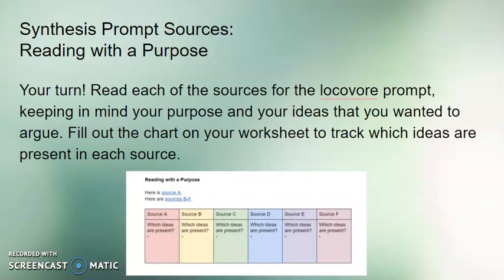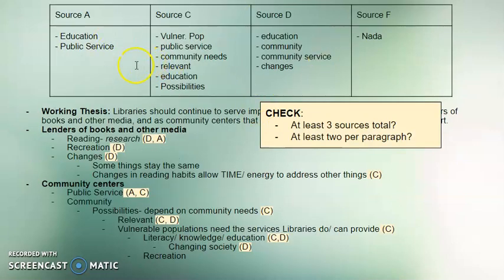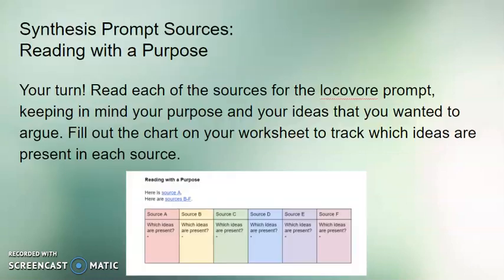So your turn to practice. Go back to your sources — for the locavore prompt, you already looked at these for the source information boxes at the top. Now go through and read them. While you're reading, keep in mind your purpose and the ideas you wanted to argue. On the worksheet, fill out the section tracking which ideas are present in each source, just like I did with my sample ones. If you have a source that really doesn't fit, that's okay, but you should have multiple sources that express the ideas you've pulled from the prompt.